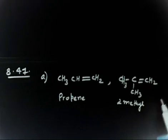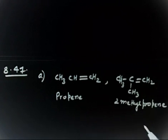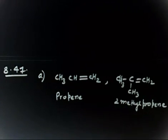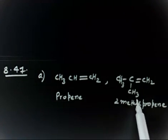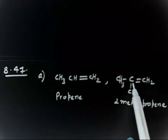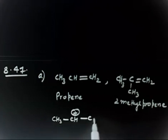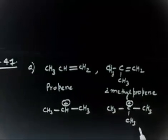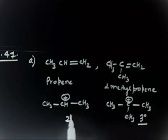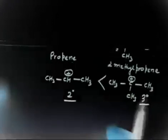Now which will be more reactive towards HBR? If I treat HBR with both compounds, which reaction rate will be faster? The answer is 2-methylpropene, because the carbocation generated will be tertiary in that case, whereas with propene the carbocation generated will be secondary. So with HBR addition you get a tertiary carbocation (CH3)3C+ versus a secondary carbocation CH3-CH+-CH3. This tertiary carbocation makes 2-methylpropene more reactive and propene less reactive.